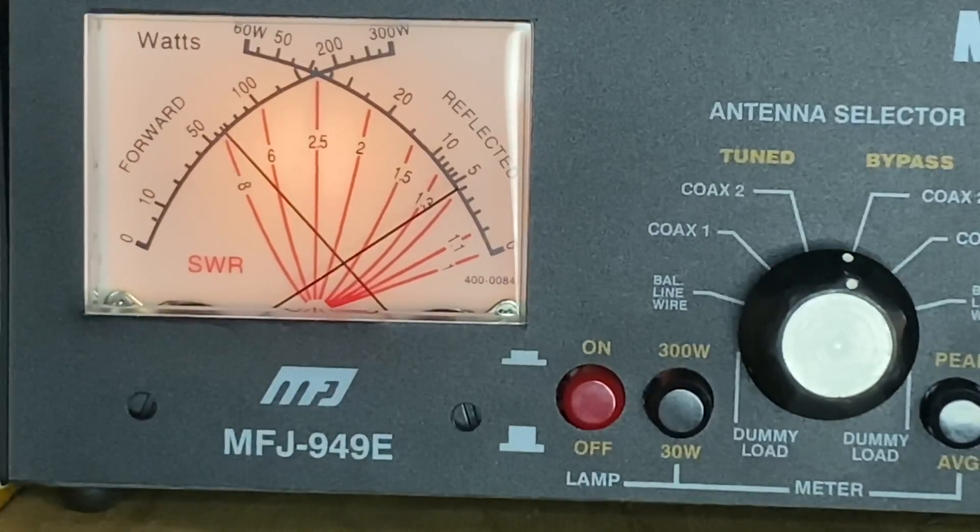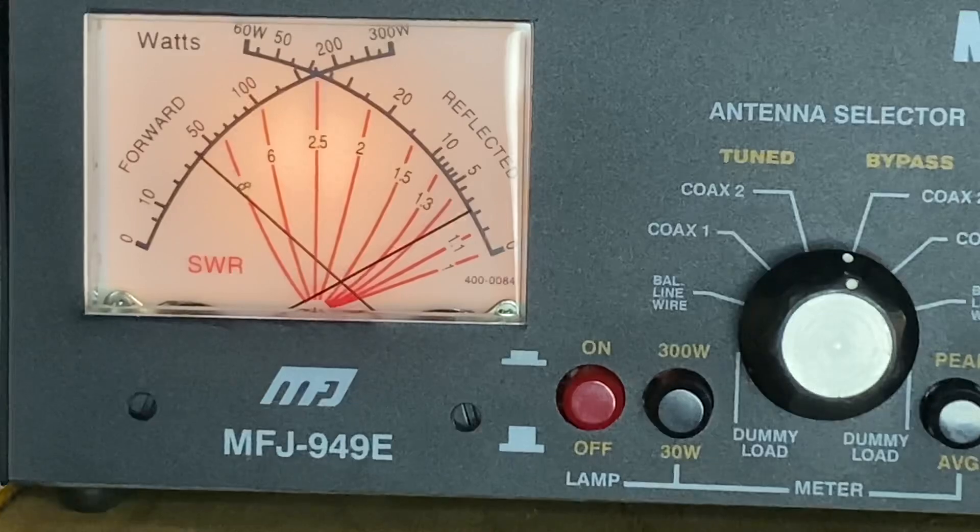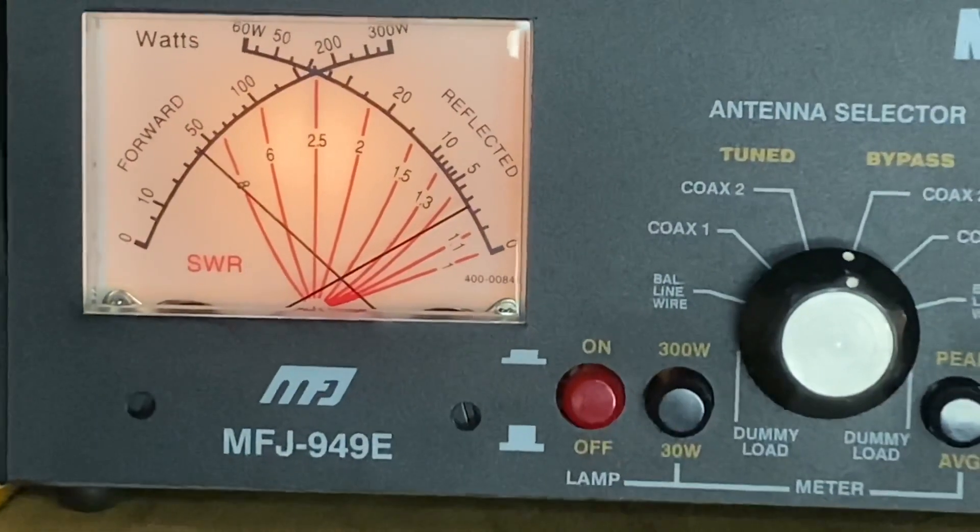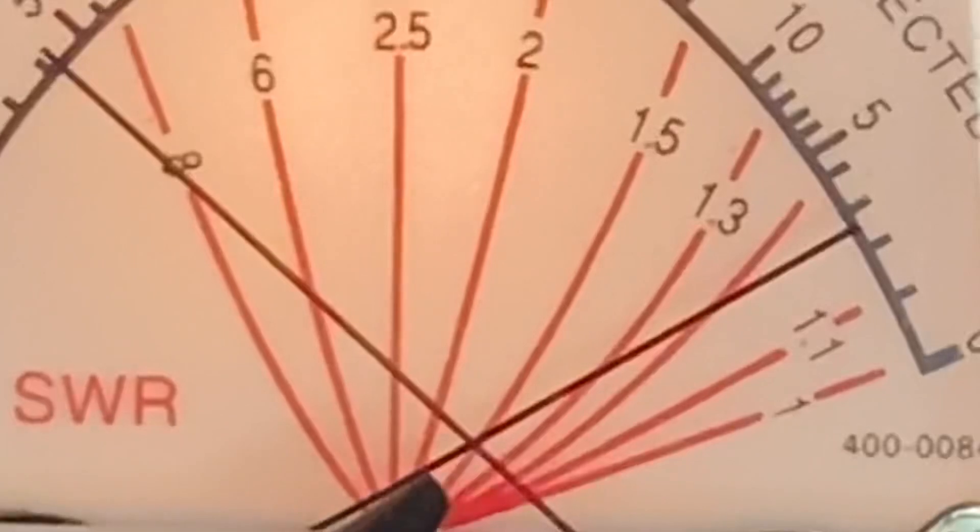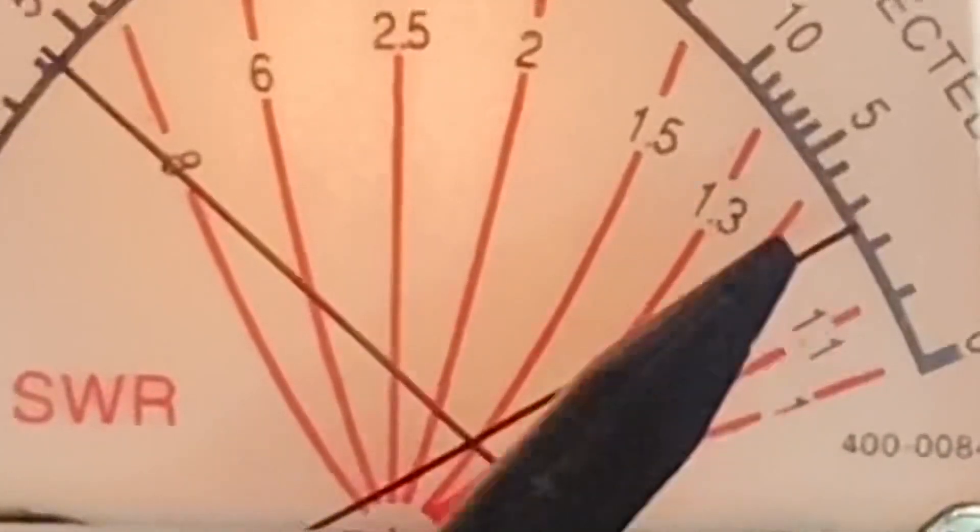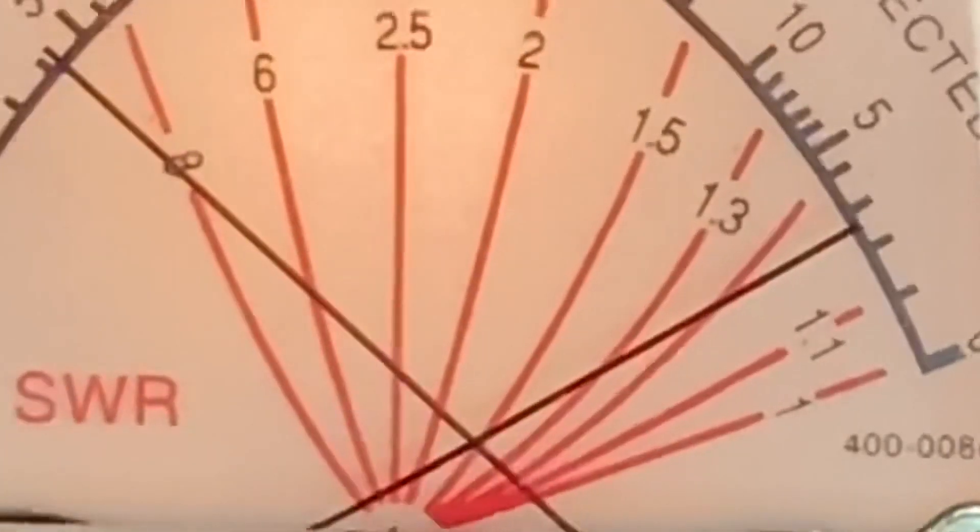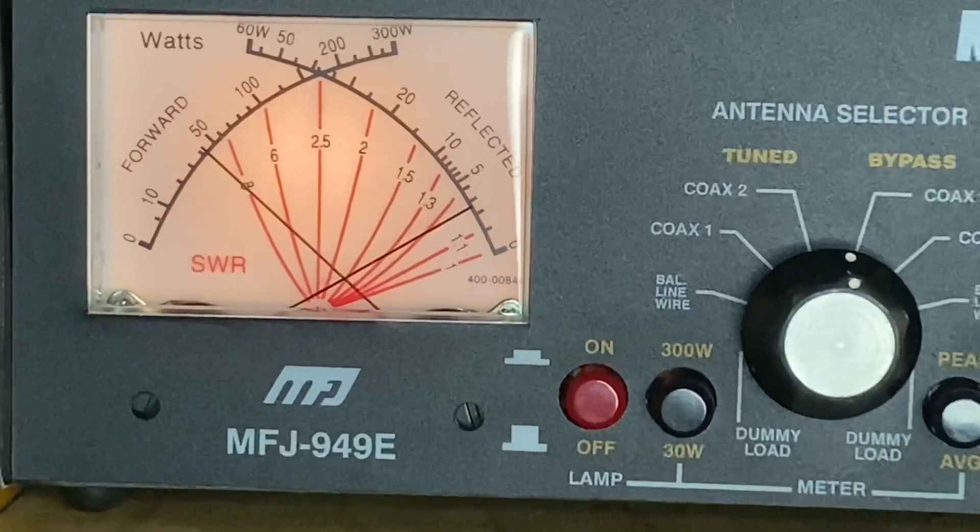So again, if I make it like this, if I zoom in, 1.5. So VSWR is 1.5. We are reading correctly the cross needle. We're not saying it's 1.2, 1.1, 1.2. It's saying 1.5. So we are reading correct, but still, this is not the best way.